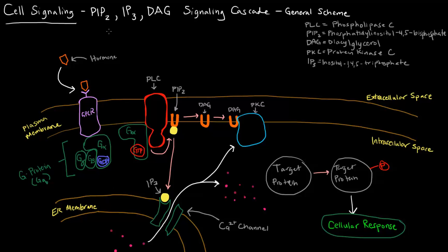In this video, I want to give a brief overview of the PIP2-IP3-DAG signaling cascade. So what's going on with that cascade, or that pathway?